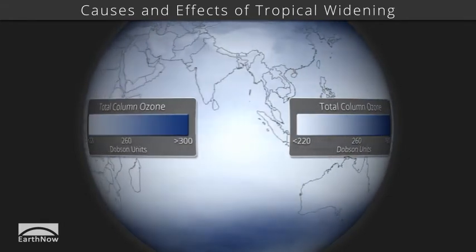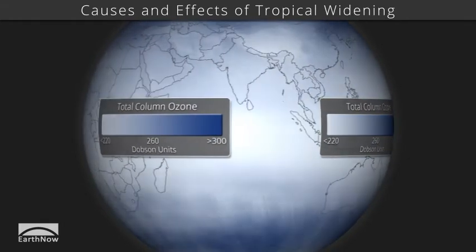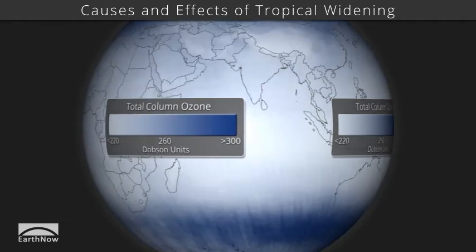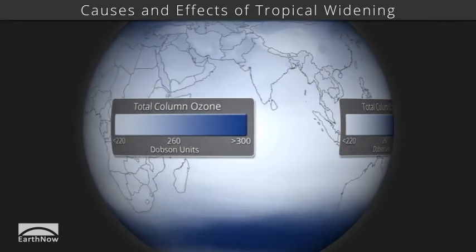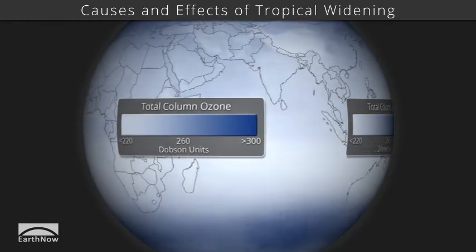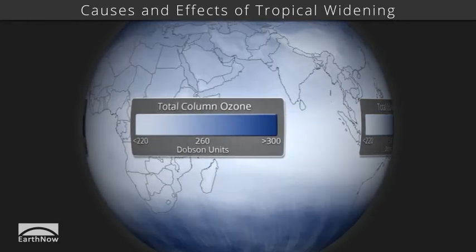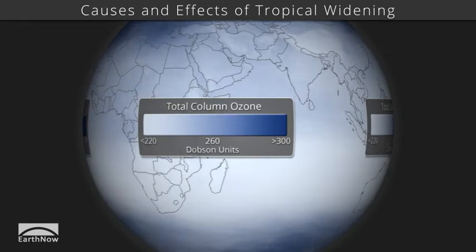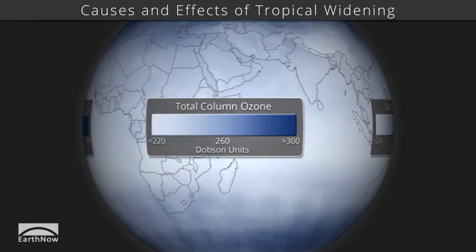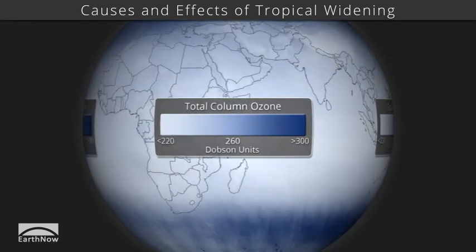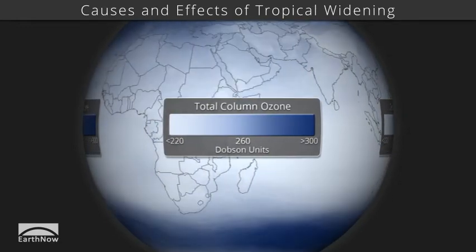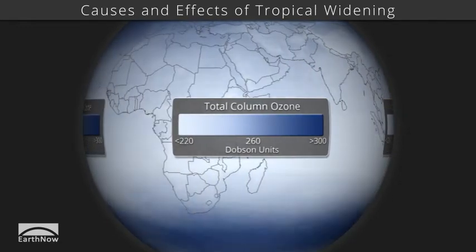Ozone at the top of the atmosphere forms naturally and is good, shielding us from the sun's ultraviolet rays that cause sunburn. Bad ozone near the ground is caused by pollution and damages plants and people's lungs.